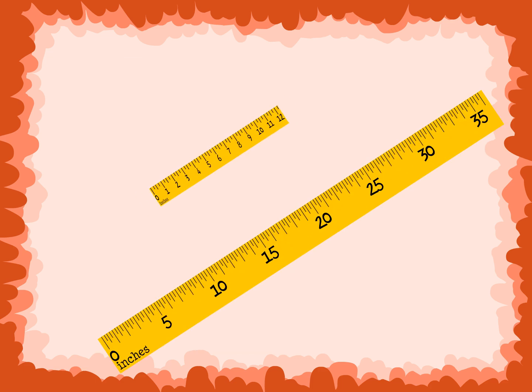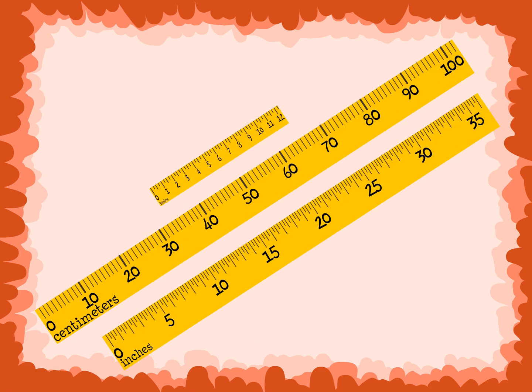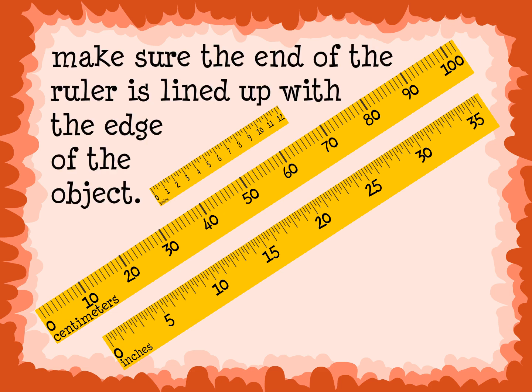We can use a ruler, yardstick, or meter stick to measure the length, width, and height of an object. To measure, you need to make sure that the end of the ruler is lined up with the edge of the object. If we do not have correct placement of the object, we will not get the true measurement. Placement is very important when measuring.